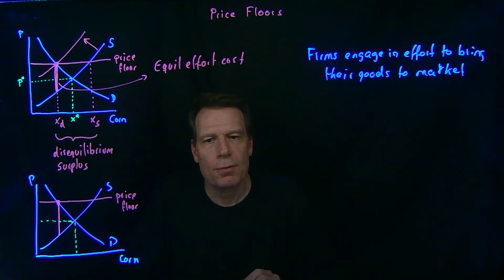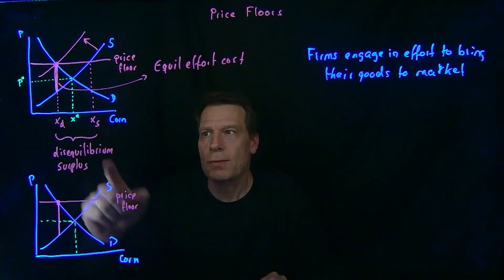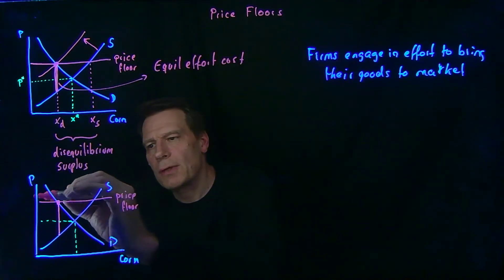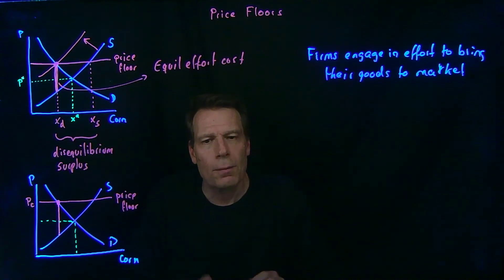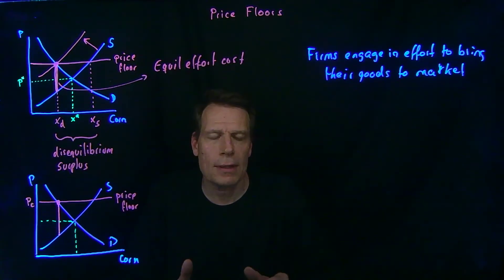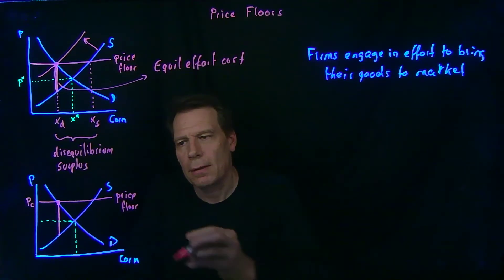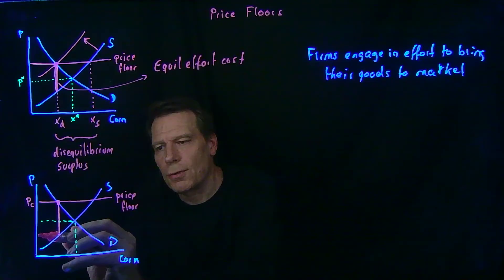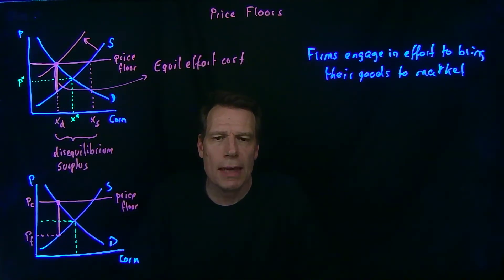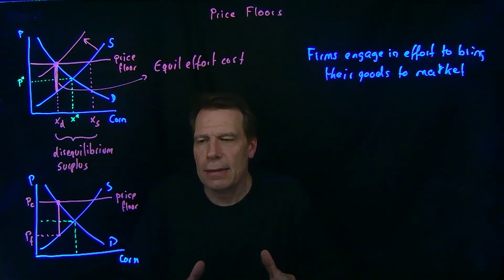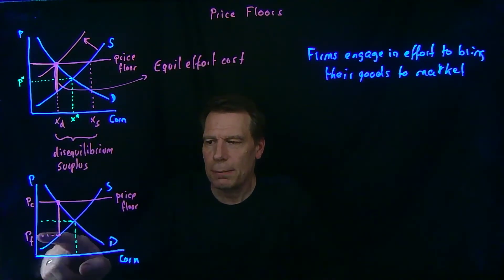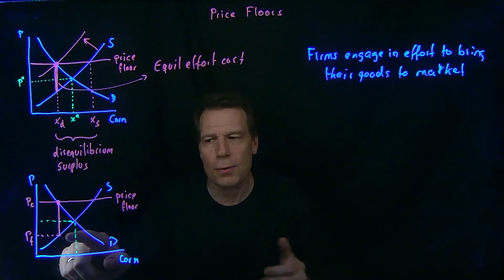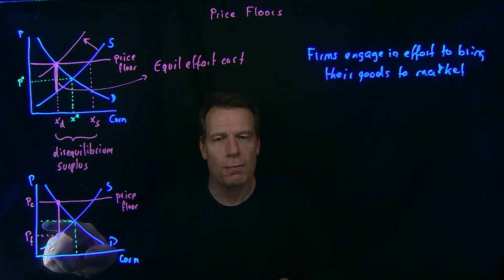Now we can ask: who is paying and receiving what price? Consumers are certainly paying the price floor — that's the price they pay to the farmers, which is why they've cut back on quantity demanded. But is that the price the farmers are actually receiving? Not once we net out the additional effort costs they had to engage in to sell those bushels of corn. We have to go down by the effort cost to find the net price that firms are actually receiving. So the price that farmers actually get, once we account for their costs of bringing goods to market, is below what the equilibrium price was before the policy was imposed.